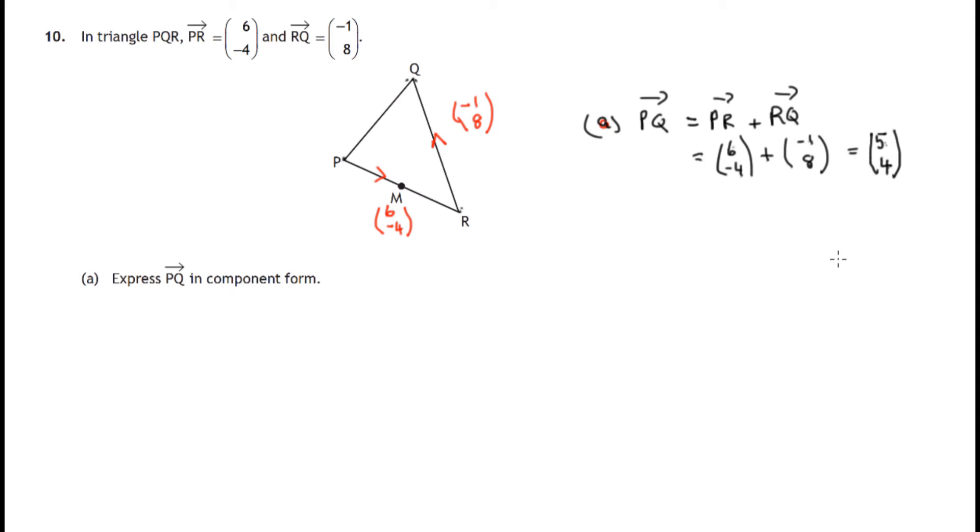So there's the components of the journey from P to Q. PQ has been expressed in component form. So now let's have a look at part B.